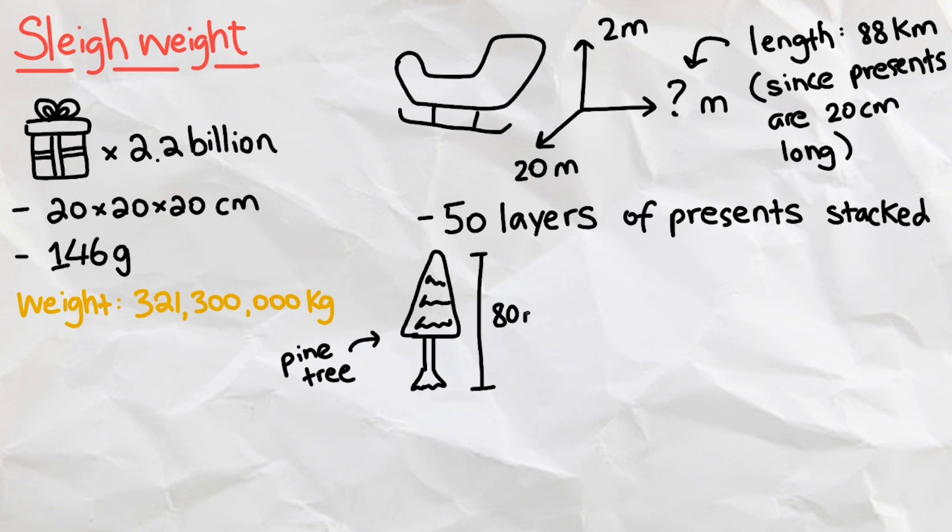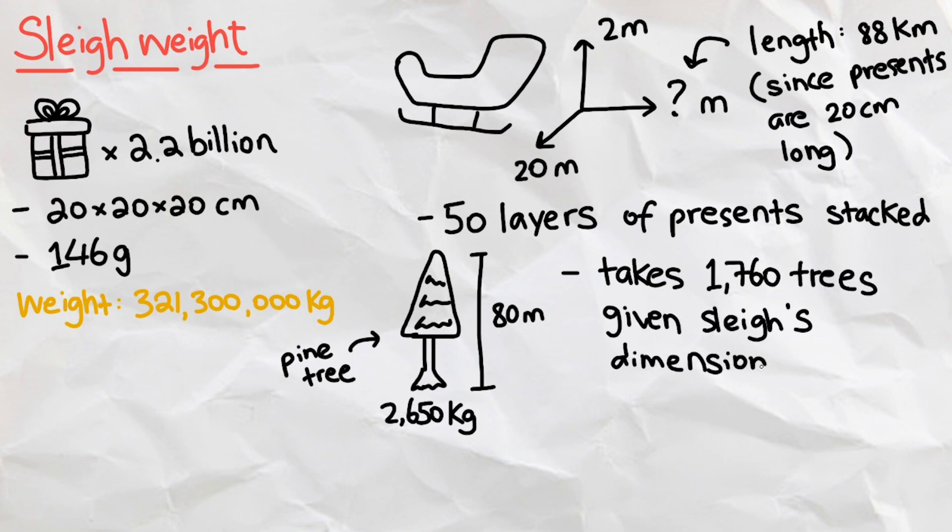These trees are up to 80 meters tall and weigh 2,650 kg. Given the sleigh dimensions, it will take about 1,760 trees, bringing the weight of the sleigh to be 4,664,000 kg. This means that the geese will have to carry a total of 225,964,000 kg.